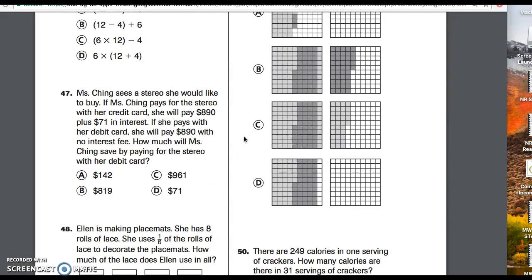Number 47. Miss Ching sees the stereo she would like to buy. If Miss Ching pays for the stereo with her credit card, she'll pay $890 plus $71 in interest. If she pays with her debit card, she will pay $890 with no interest fee. How much will Miss Ching save by paying for the stereo with her debit card?